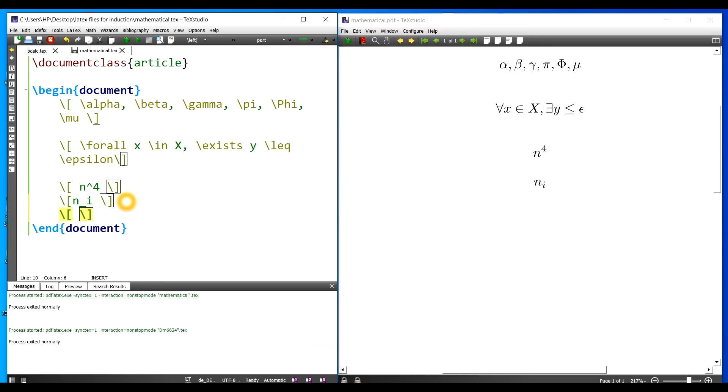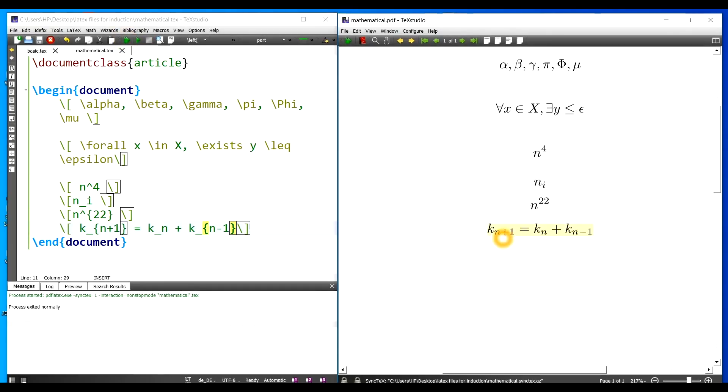Suppose I want to write n to the power of 22. If I just write n to the power of 22 and execute it, I will just get the first expression as the superscript. The other expression comes in the same line. For that I need to put them in parenthesis. If I put them in parenthesis the whole expression is now taken as superscript. Same for the subscript. If there is an expression then it has to be written in parenthesis. Let me write a small expression. Suppose I am writing k underscore n plus 1 is equal to k underscore n plus k underscore. Now I want to write n minus 1. If I had not written the parenthesis, I would not have got the whole expression as subscript.